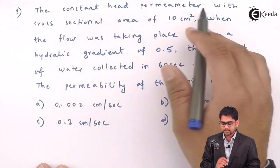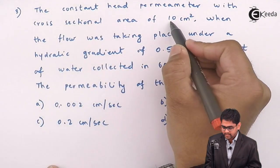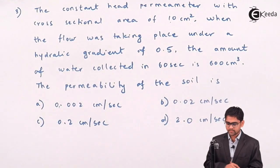In the constant rate permeability test, the cross-sectional area is given as 100 cm². Area of flow is given as 100 cm².